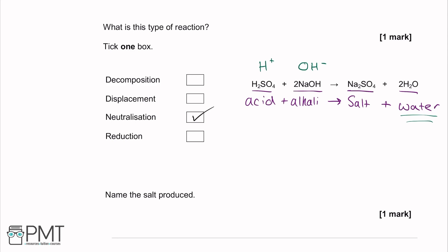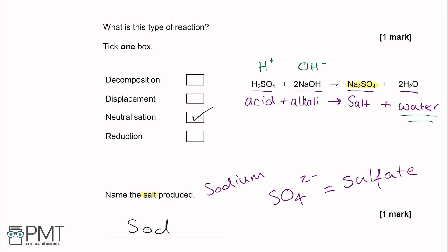The next question asks to name the salt produced. The salt is Na2SO4. Na is sodium, and the SO4 2− ion is a sulfate. Put two and two together: the name of the salt is sodium sulfate.